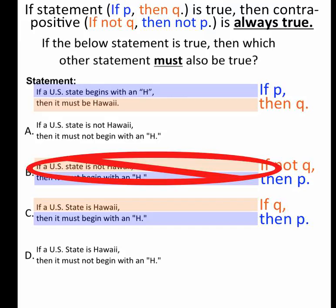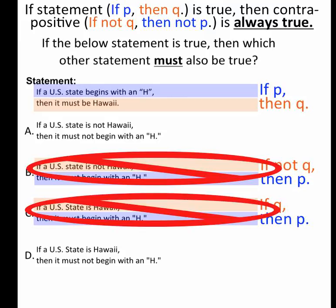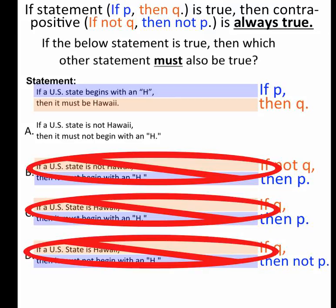This one is if Q, then P. That's not my contrapositive. And the next one, if a US state is Hawaii, again, that's if Q, and this is a little closer because it says then not P, but again, not the contrapositive.